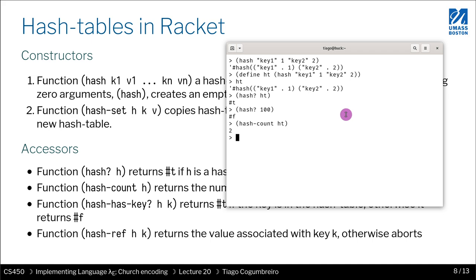So we can very easily compute the hash table, how many elements are there. And we can also query a hash table to see if there's a certain value bound to a certain key. So I can do hash-ref, and I pass my first element is the hash table, and then I pass the key, and I'm passing as key key one. And that returns one as expected.